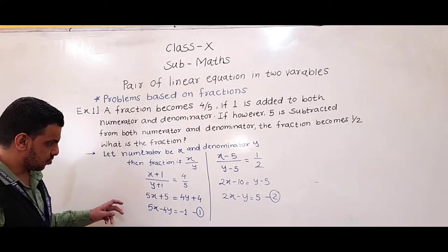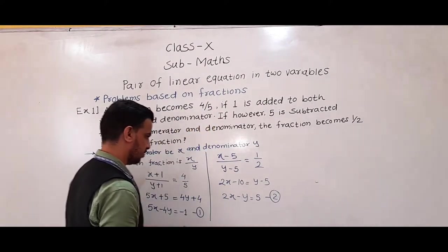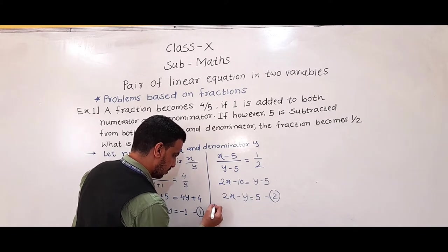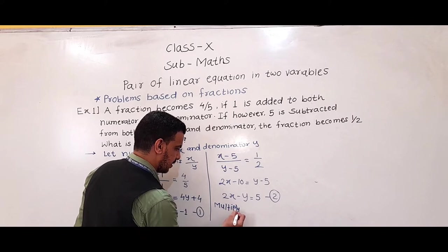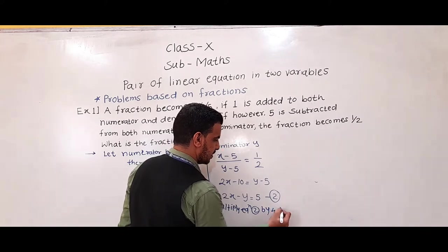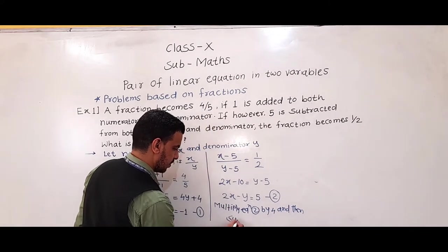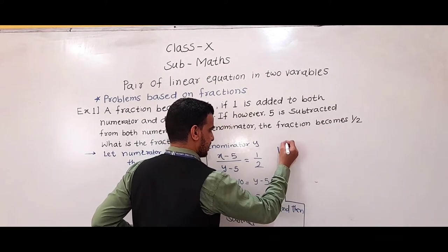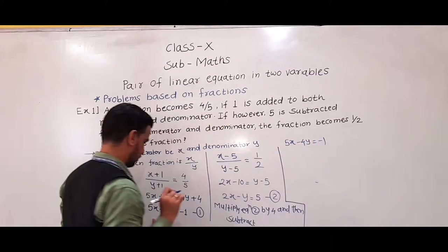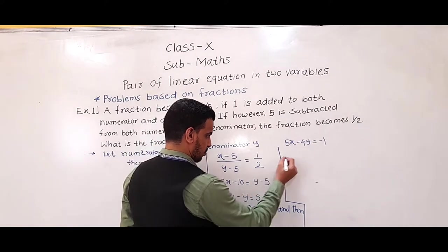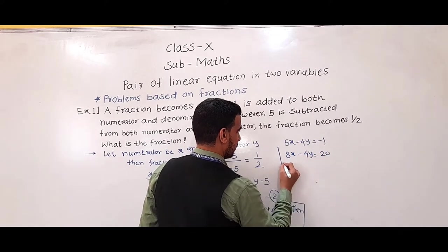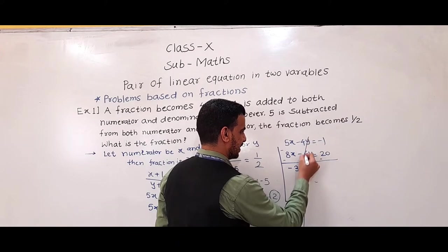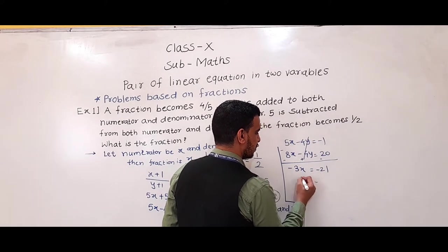Now we have to solve equations 1 and 2. Equation 1 simplifies to 5x − 4y = −1. If we multiply equation 2 by 4, we get 8x − 4y = 20. If we subtract, minus plus minus: 5x − 8x = −3x, and −1 − 20 = −21, so x = 7.